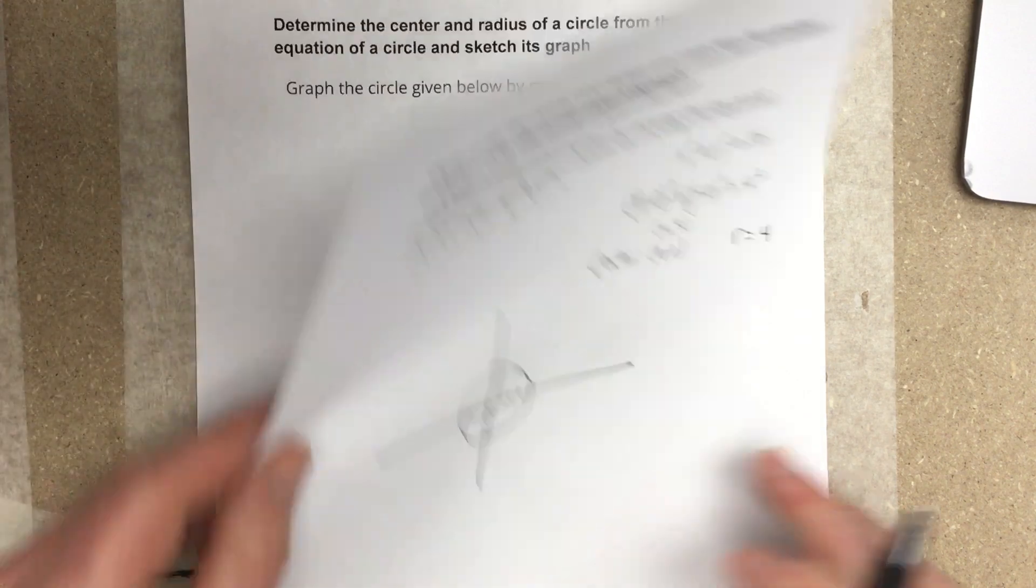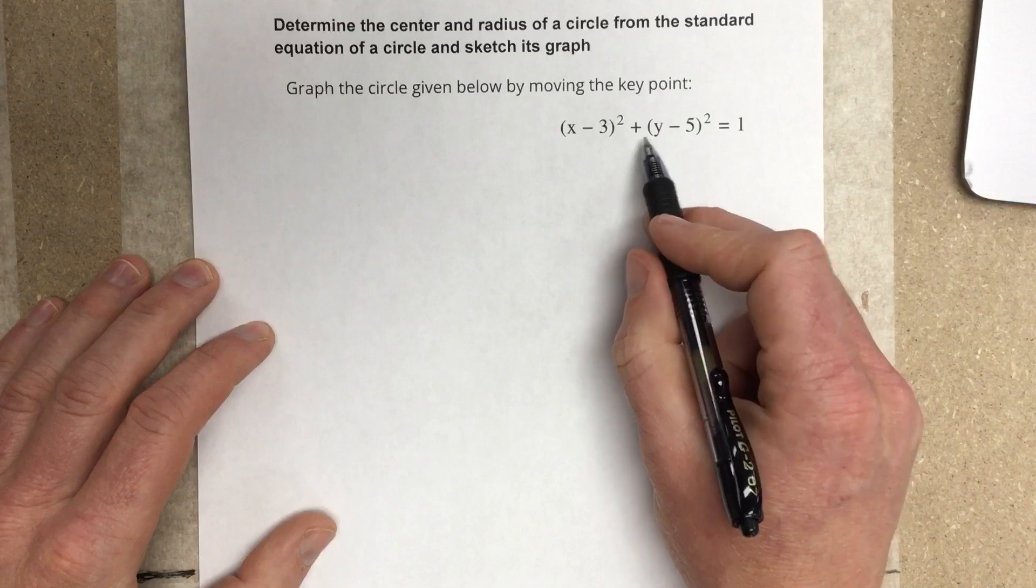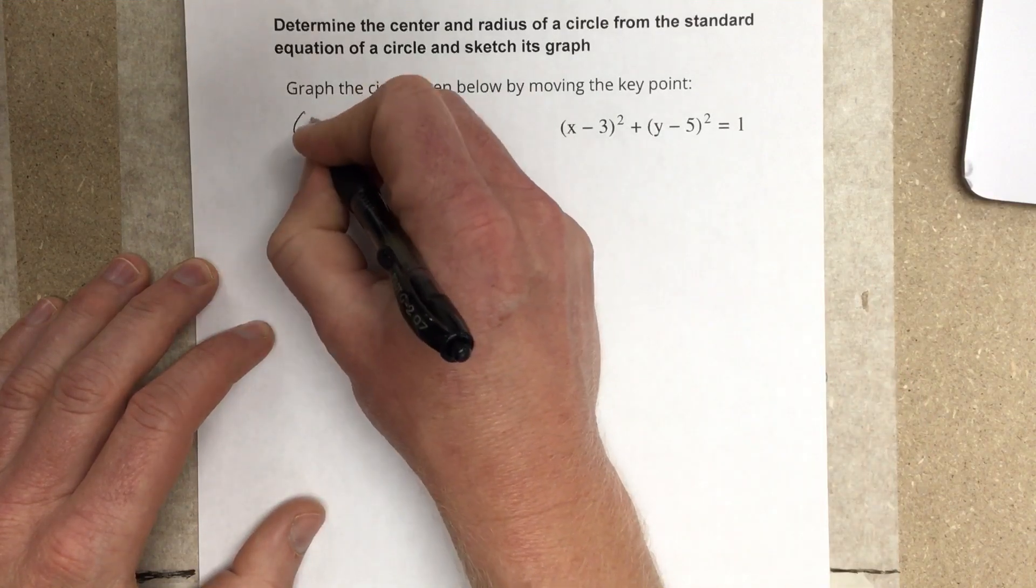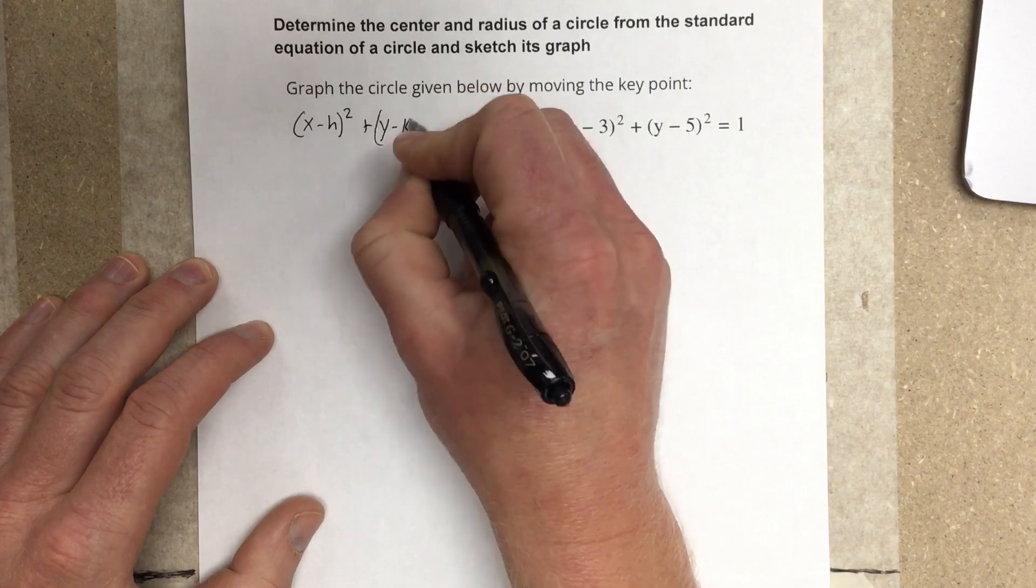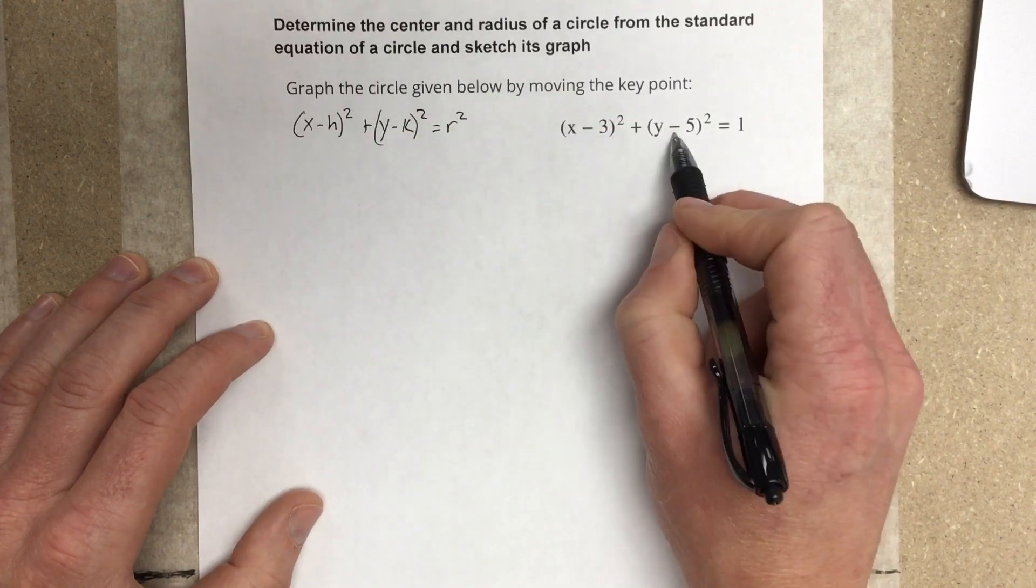Let's try another example. This time, they give us more information for the center right away because, remember, it's (x - h)² + (y - k)² = r². They give us that information on h and k right away.